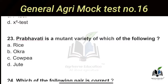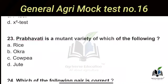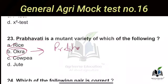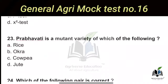The next question: Prabhavati is a mutant variety of which crop? Options are rice, okra, cowpea, and jute. The right answer is Option A — rice. Note that in the case of okra, the mutant variety is Parbhani Kranti. So Parbhani Kranti is a variety of okra, whereas Prabhavati is a mutant variety of rice.